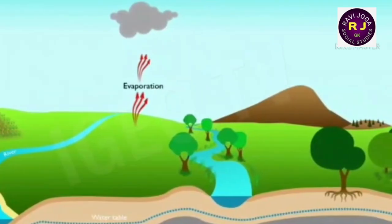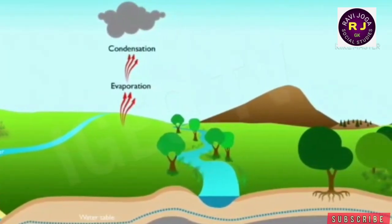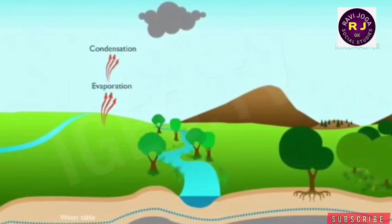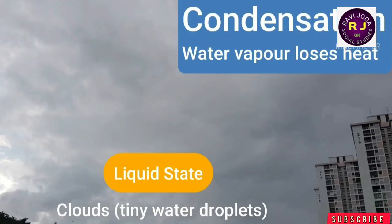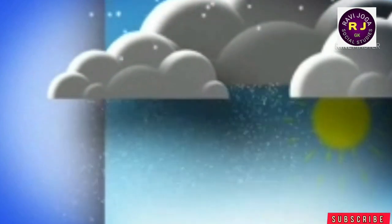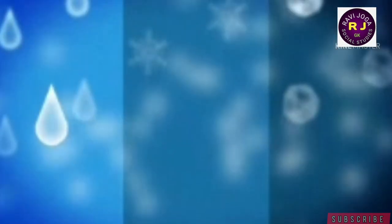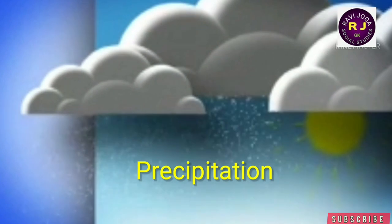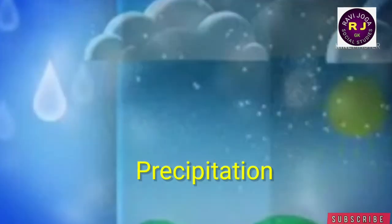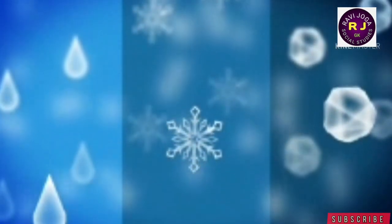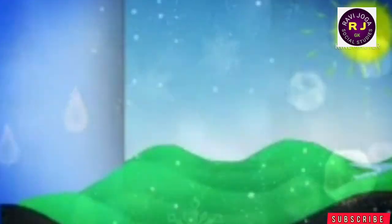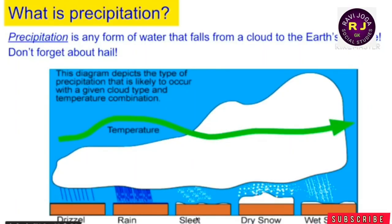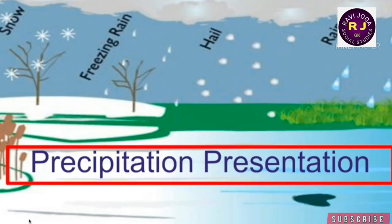Condensation: in this process, the transported water vapor is transformed into tiny droplets and clouds are formed. Precipitation is a mechanism for transporting water from the atmosphere to the earth. Any type of precipitation from clouds falls on the earth's surface in the form of rain, sleet or snow.